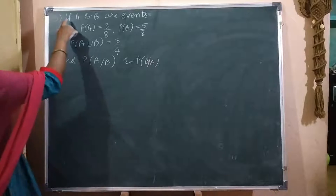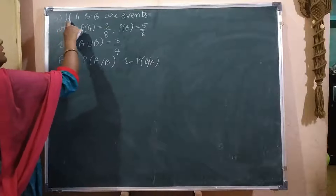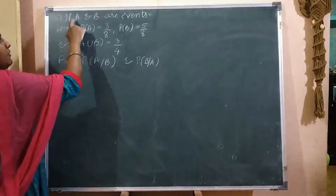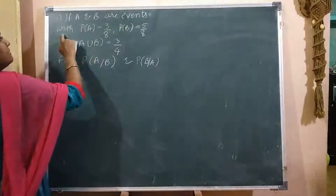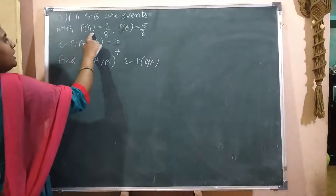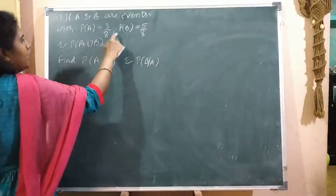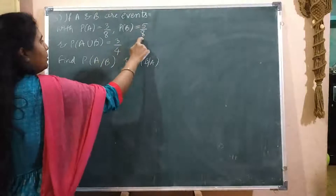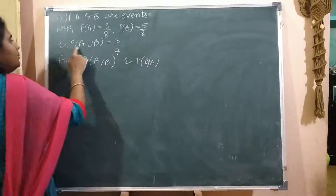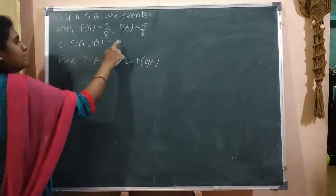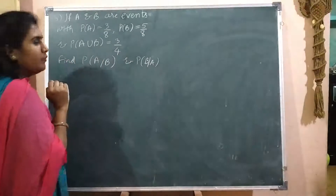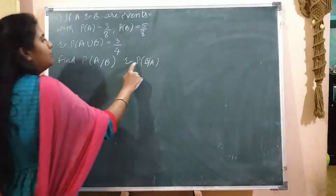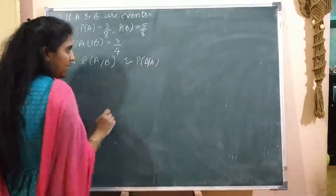In the next example on the addition theorem: if A and B are two events with P of A equals 3 by 8, P of B equals 5 by 8, and P of A union B equals 3 by 4, find P of A given B and P of B given A.